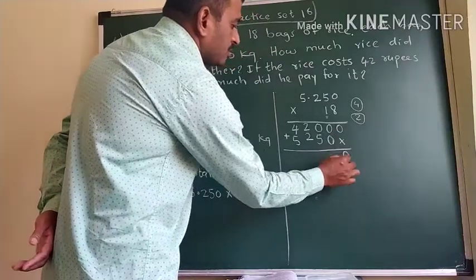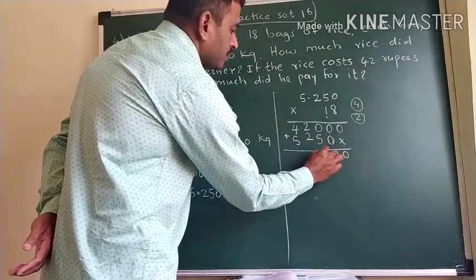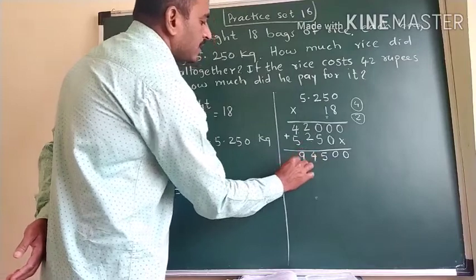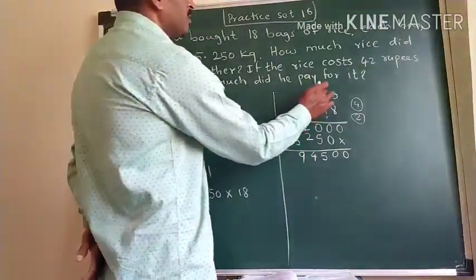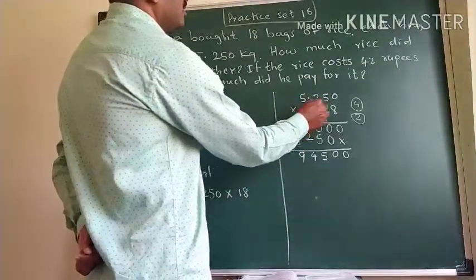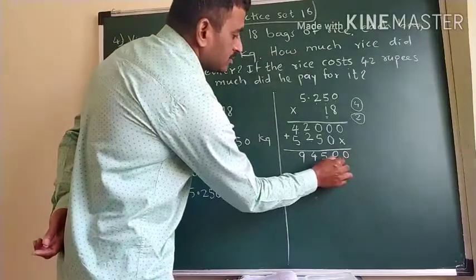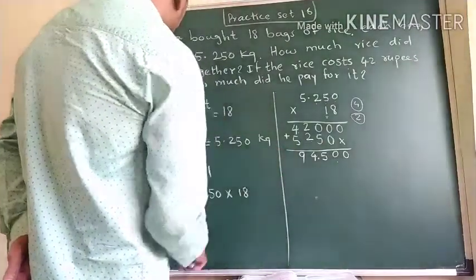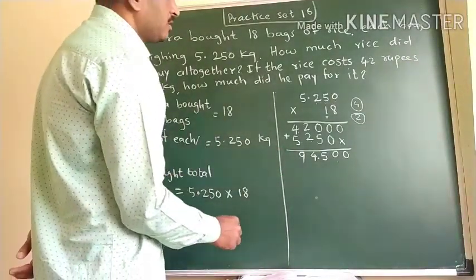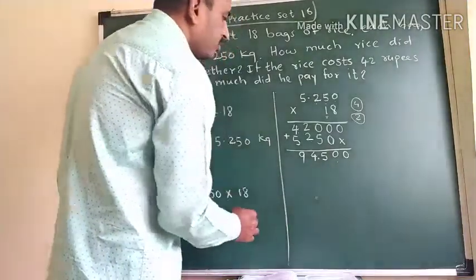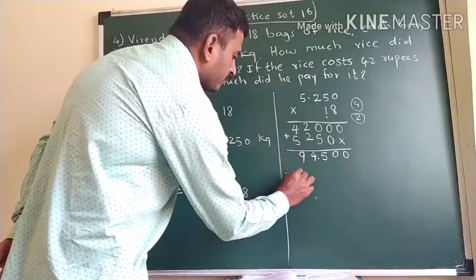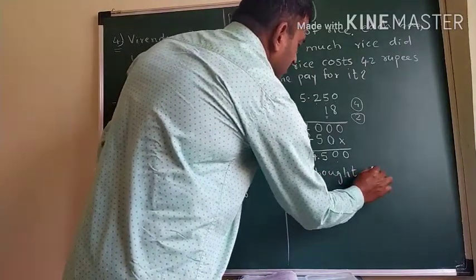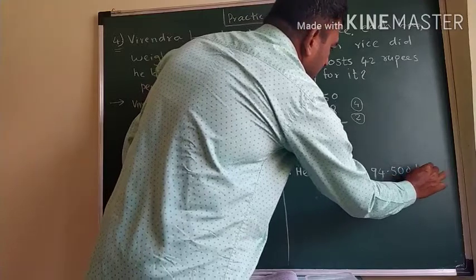Adding: 0 plus 0 is 0, 0 plus 0 is 0, 0 plus 5 is 5, 2 plus 2 is 4, 4 plus 5 is 9. Now for decimal places: 3 decimal places are in the question, so we leave 3 decimal places from the right and give a decimal point. Therefore, total rice he bought = 94.500 kg.